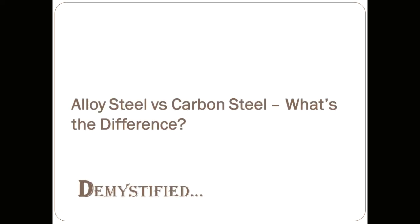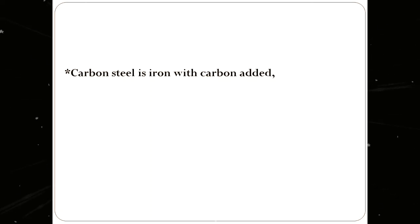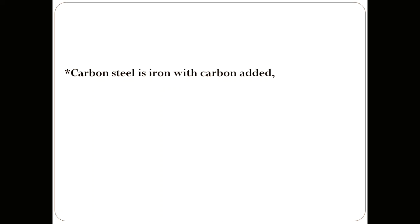Starting with carbon steel — it is nothing but iron with carbon added to it. Now, everything in nature has impurities, and even carbon steel will have them, but these extra elements don't make up a major part of the ingredient list. So in simpler terms, carbon steel is iron plus carbon.